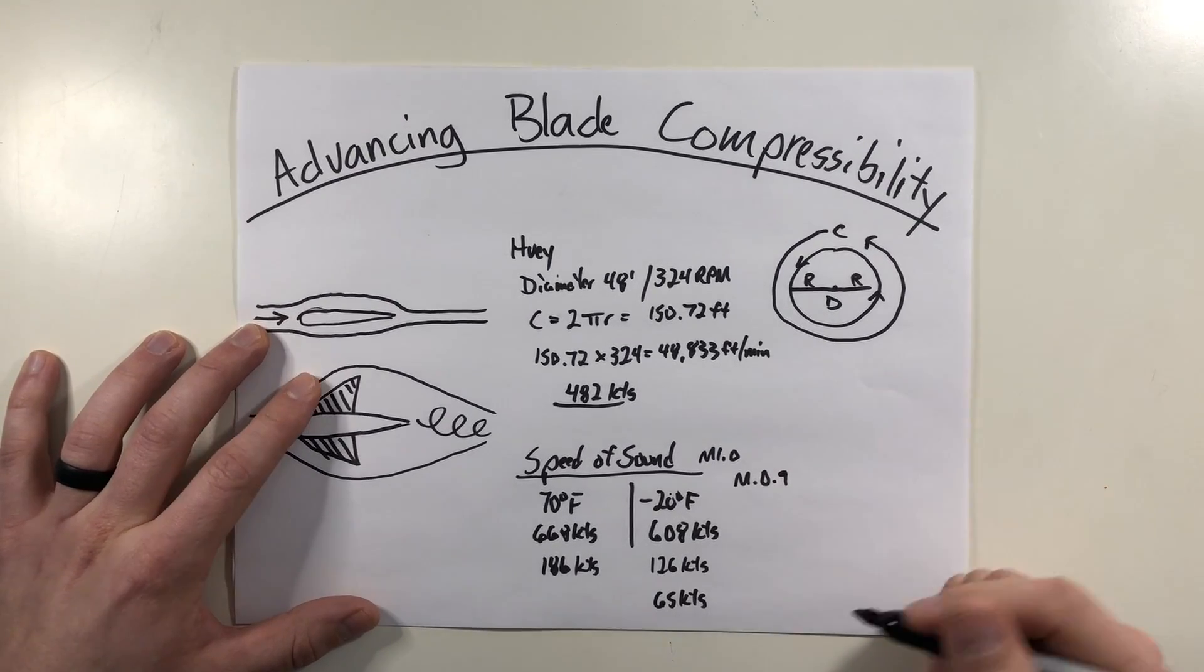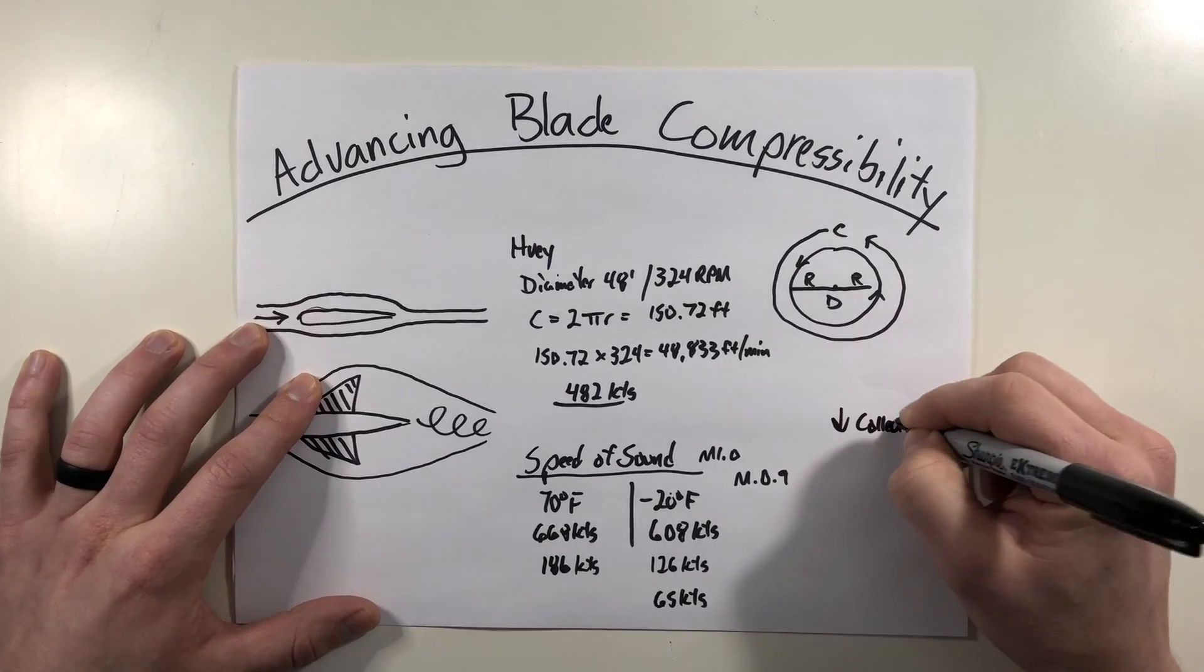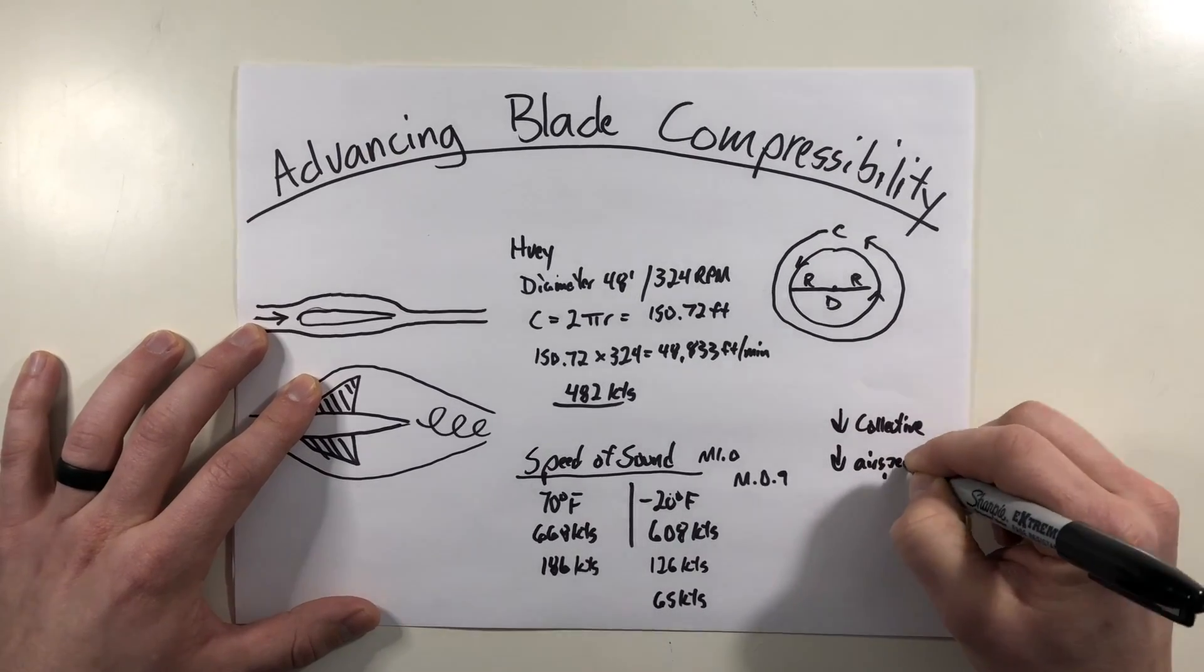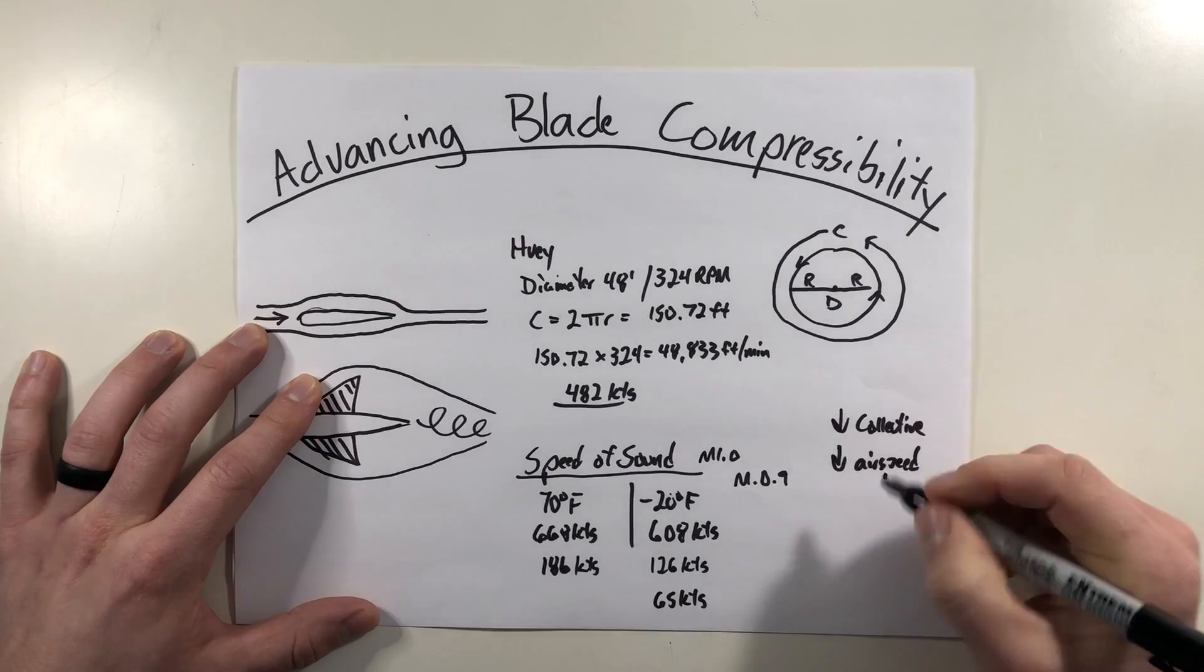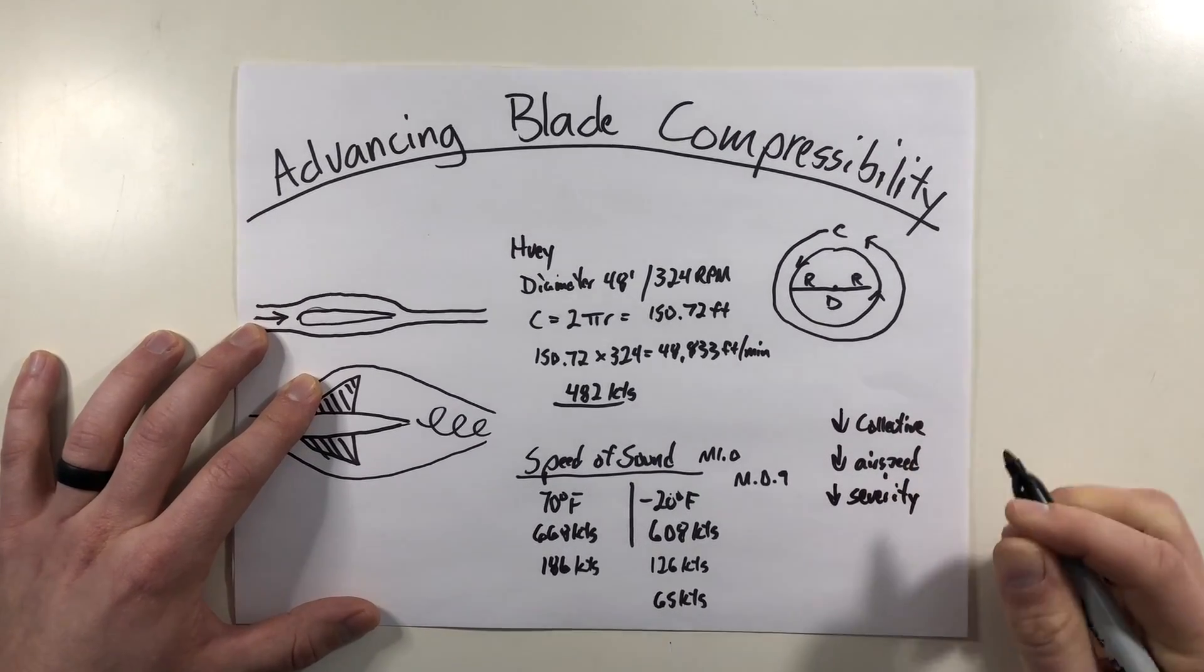So to correct for this, you want to decrease the collective, you want to try to decrease your airspeed. Overall, you're just trying to get that pitch out of the blade here, decrease the severity of whatever maneuver you were doing.